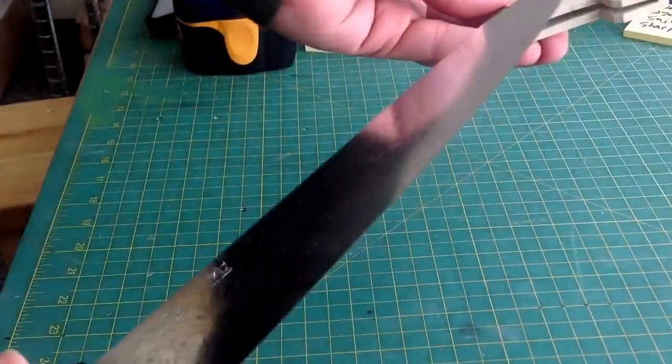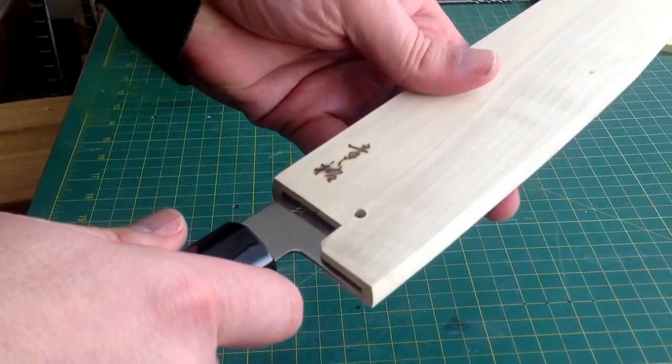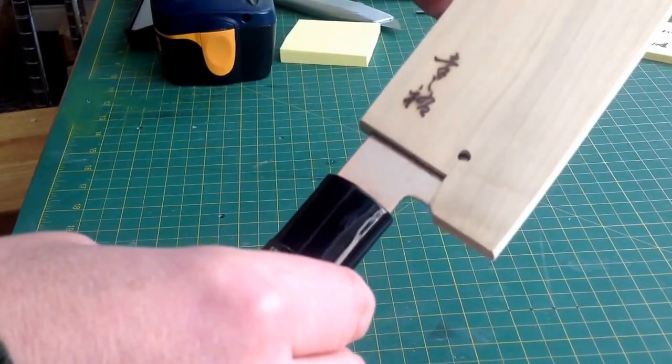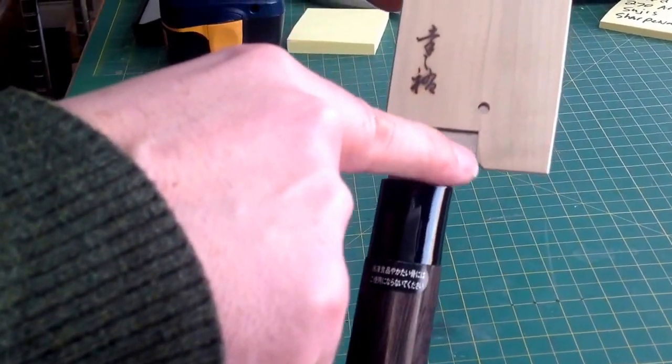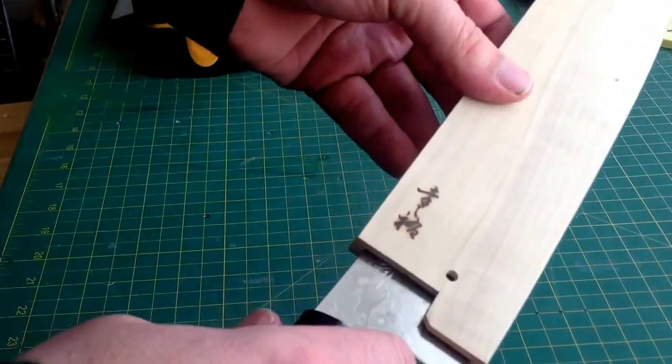The other thing that can happen is this is a 240 saya and this is a 240 knife. And you can see that that's about as far as it will go. And it still has a ways to travel up before it will reach the pin.